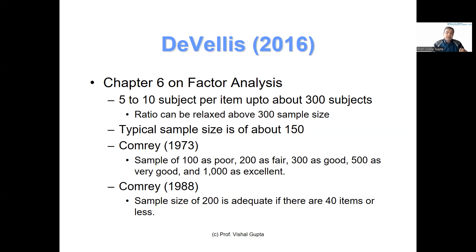Comrey 1973 reports that a sample size of 200 is fair, 300 is good, 500 very good, and 1,000 is excellent. And Comrey 1988 reports that if you have items of 40 or less in your scale, then for exploratory factor analysis a sample size of 200 should be good enough.